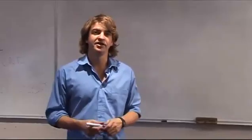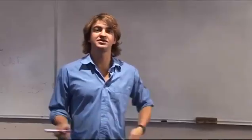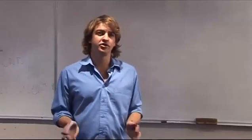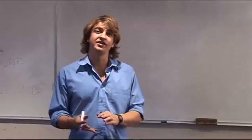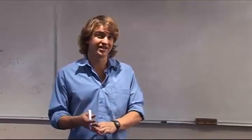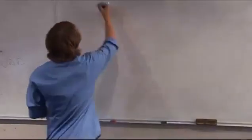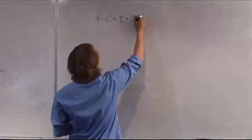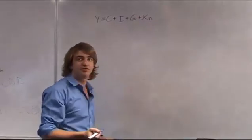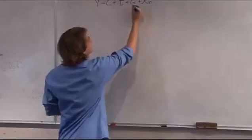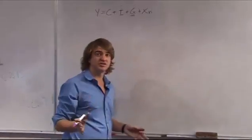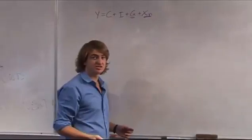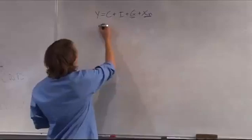We're now going to look at how to calculate the aggregate expenditure model and how to find the equilibrium GDP. Let's first assume a closed economy with no taxes and no international trade. The complete model is Y = C + I + G + XM, but in a closed economy with no government expenditure and no international trade, we simplify to Y = C + I.